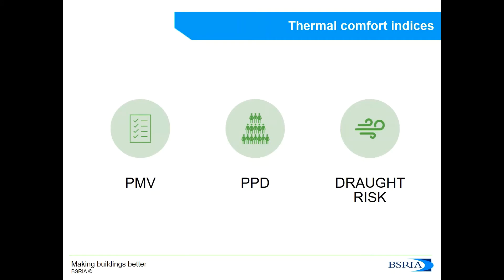So once we take into account the airspeed, the air temperature, the humidity, the metabolic rate, the clothing levels, and the globe temperature, we can calculate the thermal comfort indices, which are PMV or Predicted Mean Vote, PPD or Predicted Percentage of Dissatisfied, and draft risk. There are a few more that we'll see at the end of this presentation.